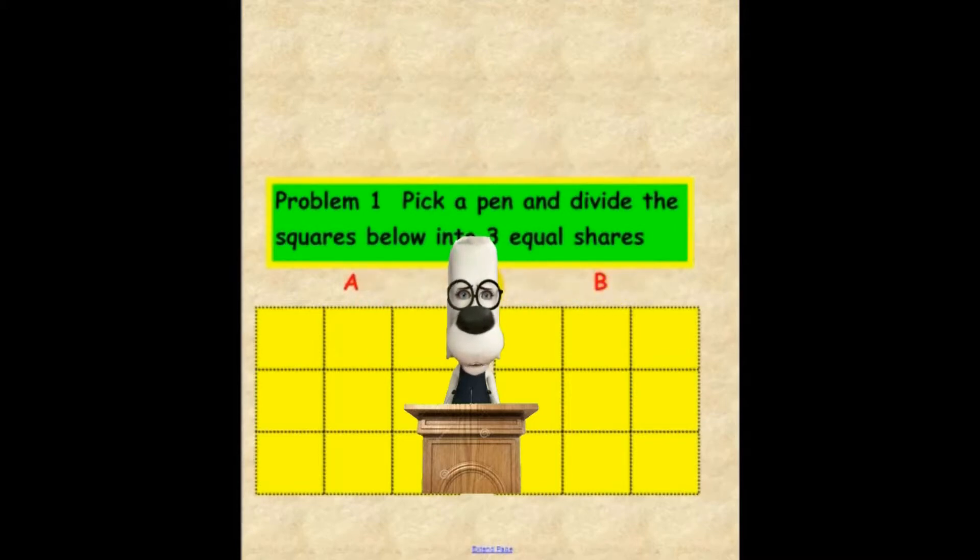When you are told to, we would like for you to pick up a pen and draw a line on the dotted lines and separate A into three equal shares and then do the same thing on B. However, we would like for you to do B a different way. While the teacher has the student doing this, please pause the video until the student has completed the problem and then resume the video and we will check your answer. Thank you.